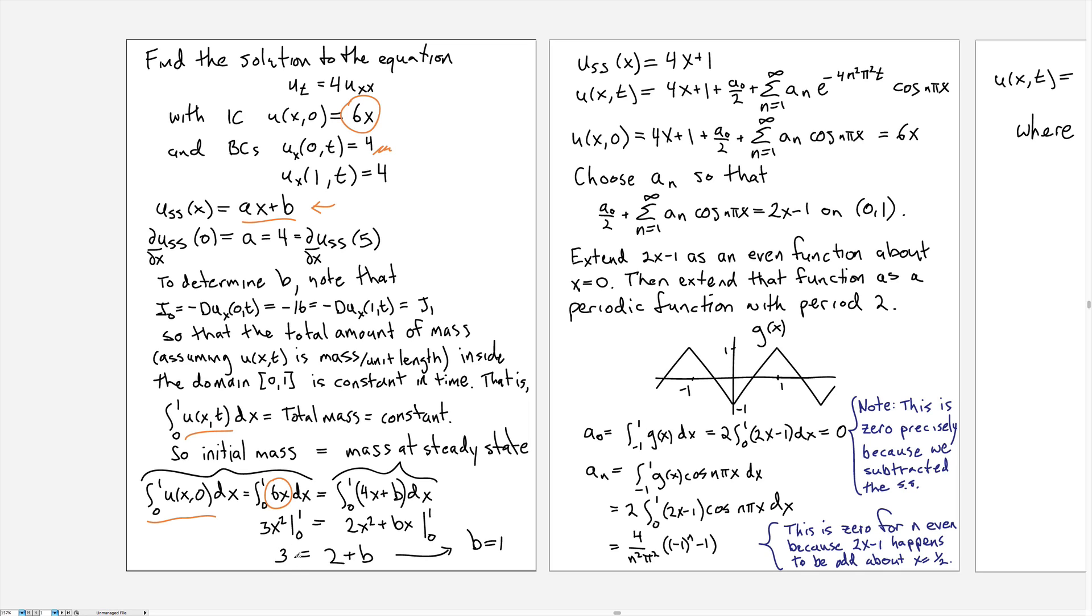Now the mass before had to be 3. The mass after, or at the end after a long period of time, is 2 + b, so b must be equal to 1. So we now know that the steady state is 4x + 1.